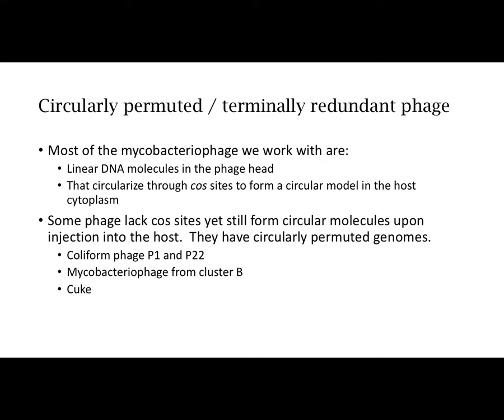That cuque is lacking cos sites is not unique, yet they still manage to form circular molecules upon injection into the host. Coliform phages P1 and P22 are the ones that are most widely studied. There's a whole cluster, cluster B, of mycobacteriophages that have circularly permuted genomes. And then from our interests, cuque. One of the phages from last year from this class is a cluster B phage.